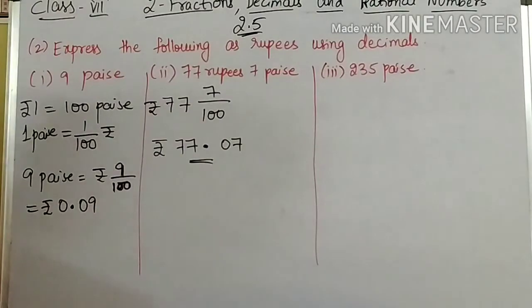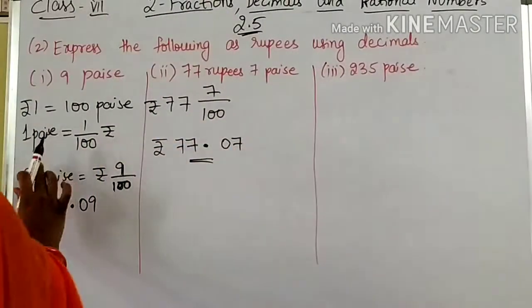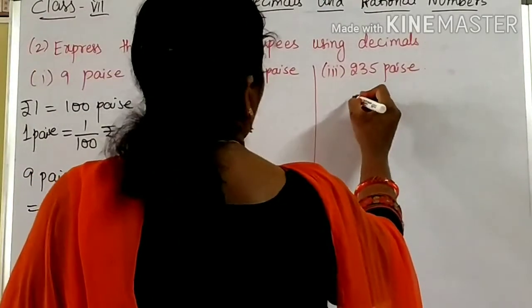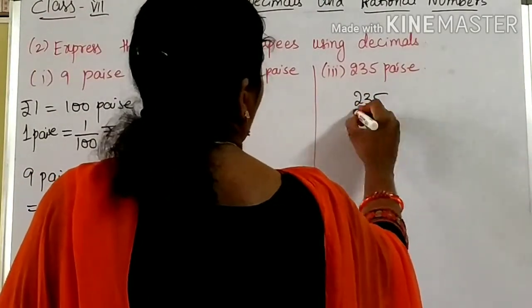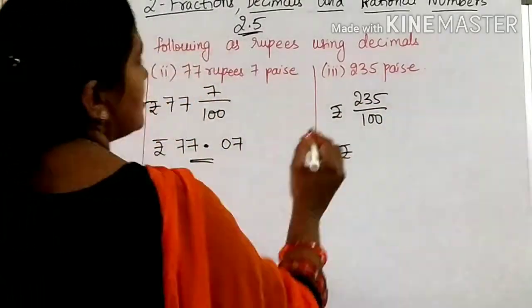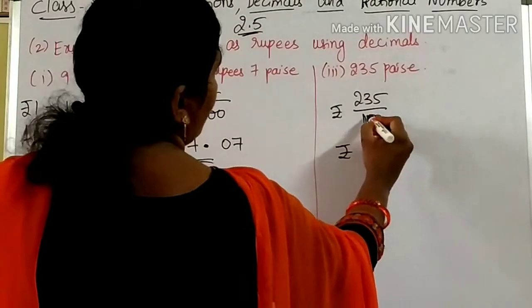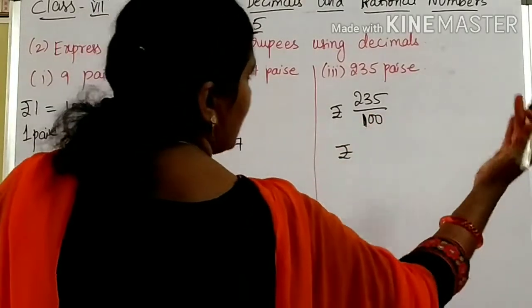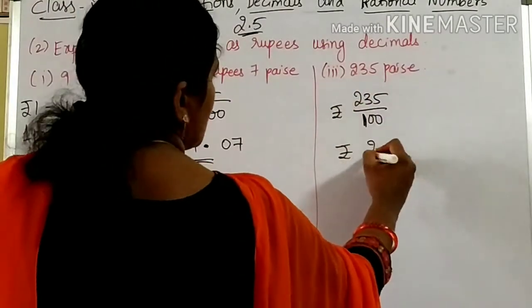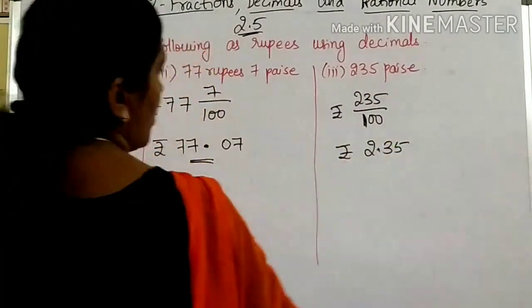Coming to here: 235 paise. Here, 1 paise is 1/100 rupees. So 235 paise is 235/100 rupees. In the denominator, 2 zeros are there. So decimal will come from right to left after 2 places. So 2.35. Rupees 2.35 is the answer.